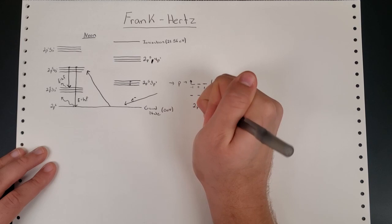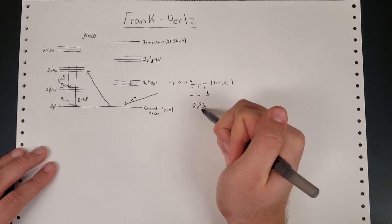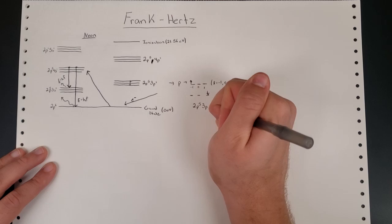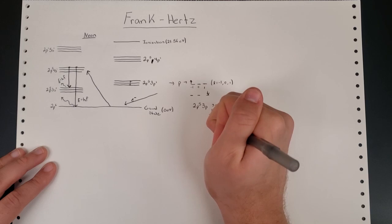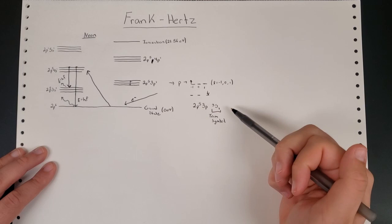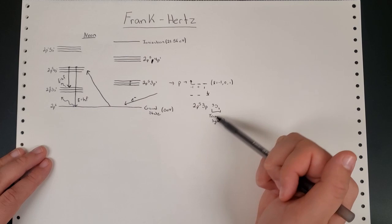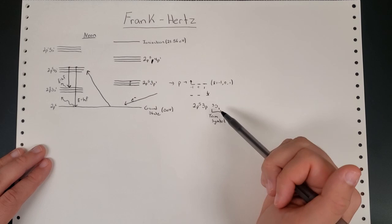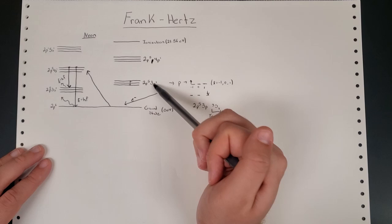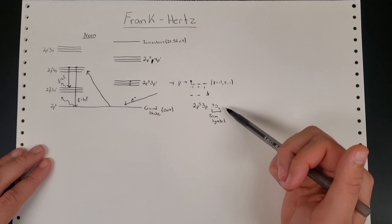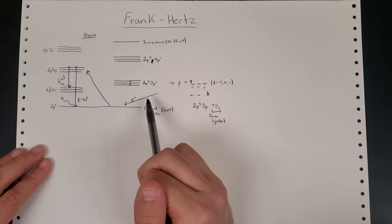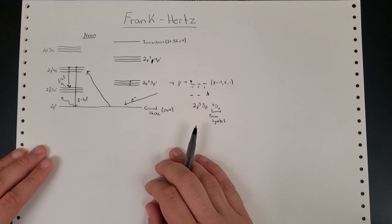In your manual, you may see something like 2p5 3p, meaning it's in the 3p orbital, and then a term symbol like 3s1. This term symbol just denotes the specific electron configuration — exactly where this electron is located in the orbital. It's a little outside the scope of this course to talk about this in depth, so we won't go into it. Just know that this is a way of denoting the specific orbital within the 3p level. All we need to worry about is the fact that these orbitals are quantized.